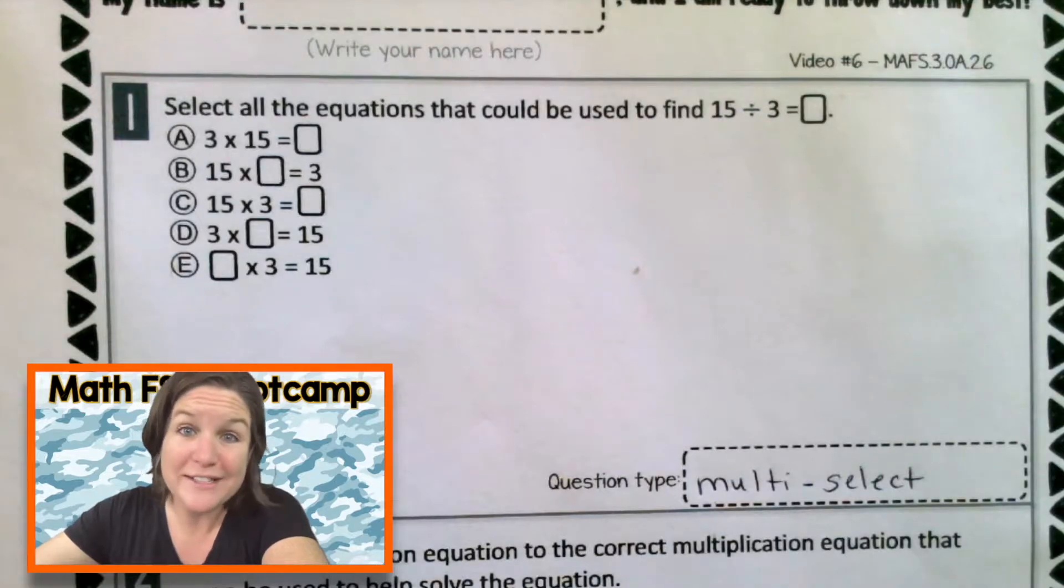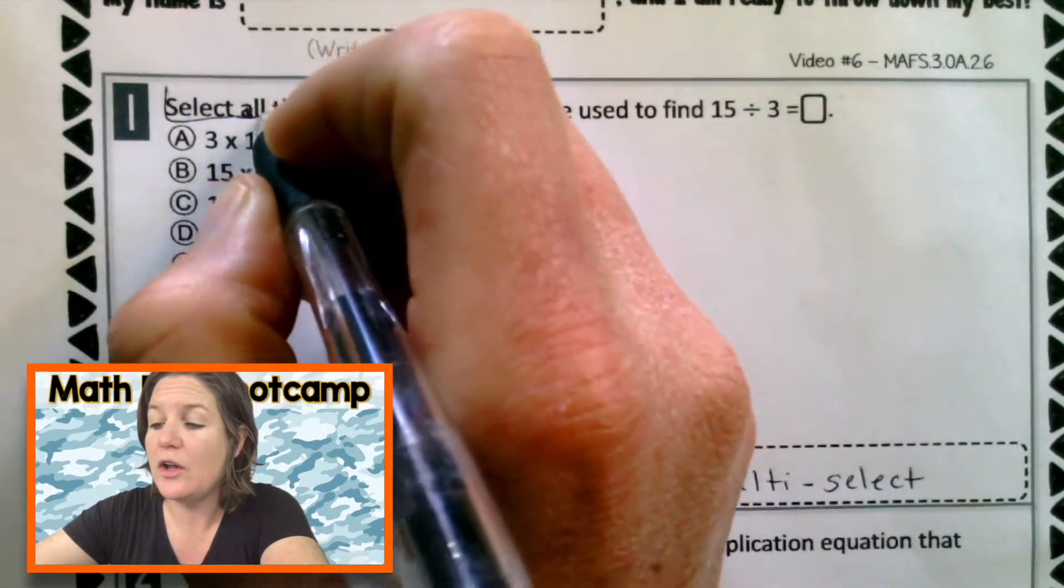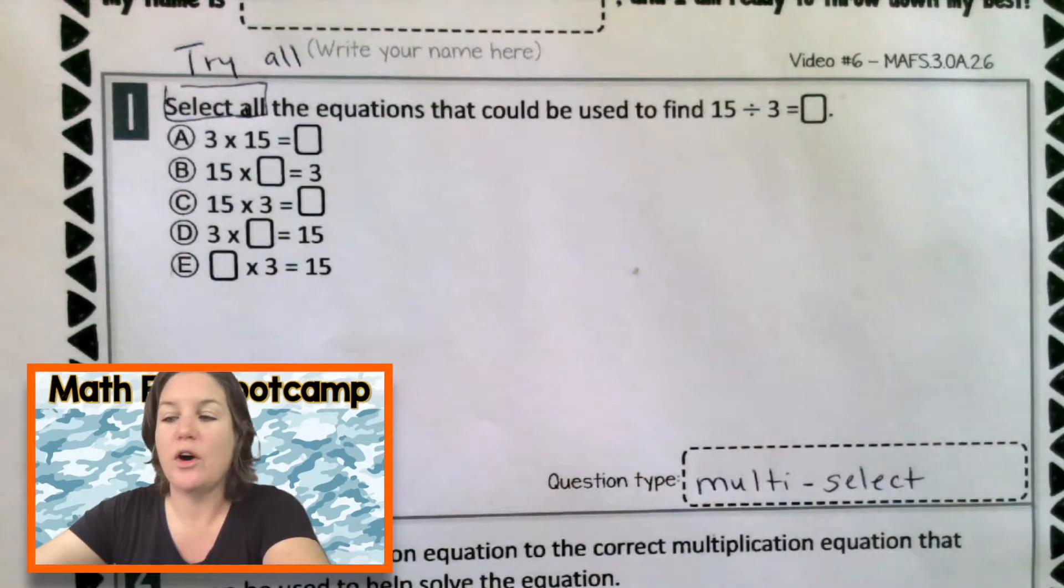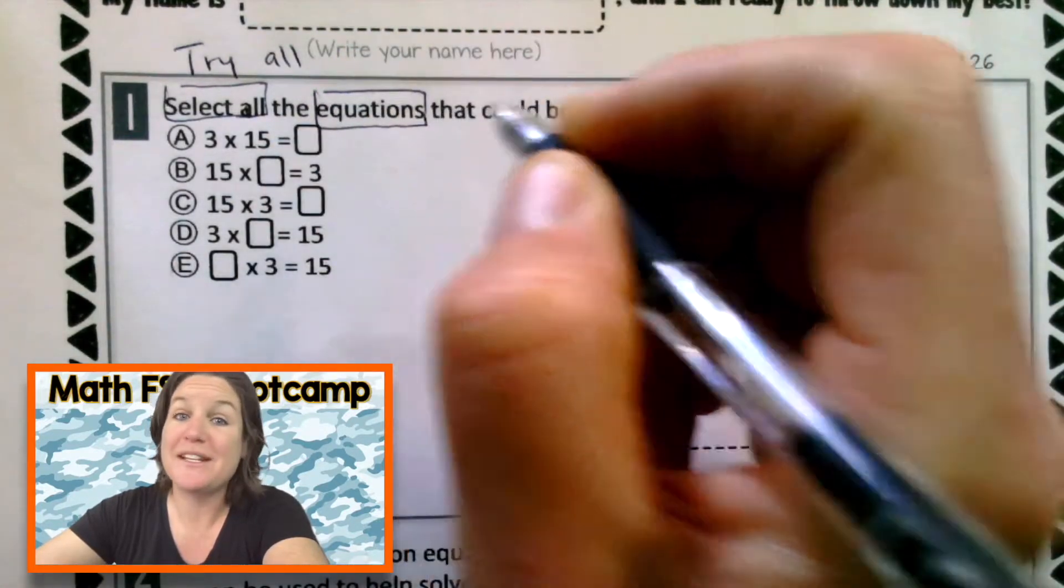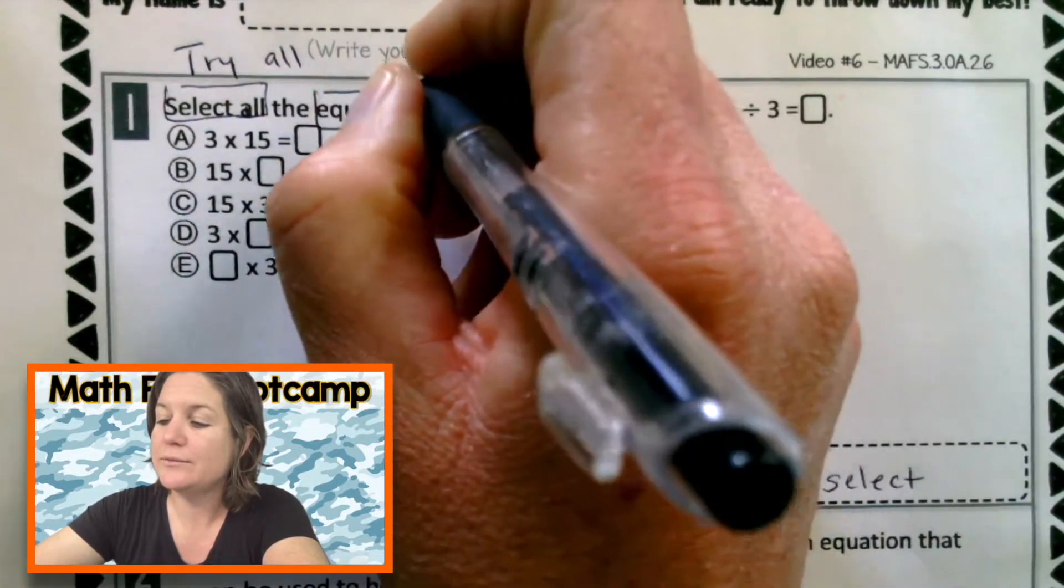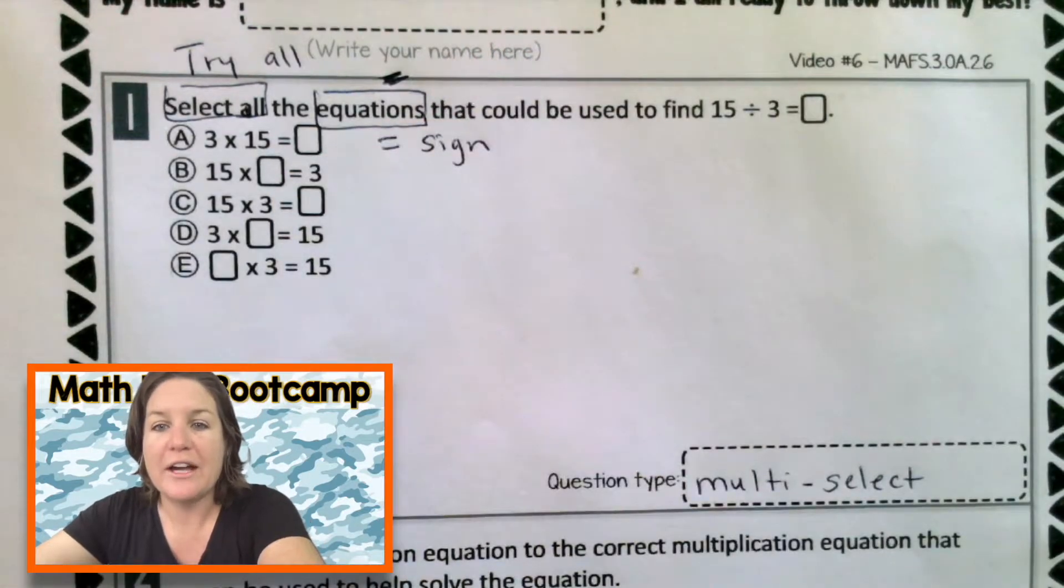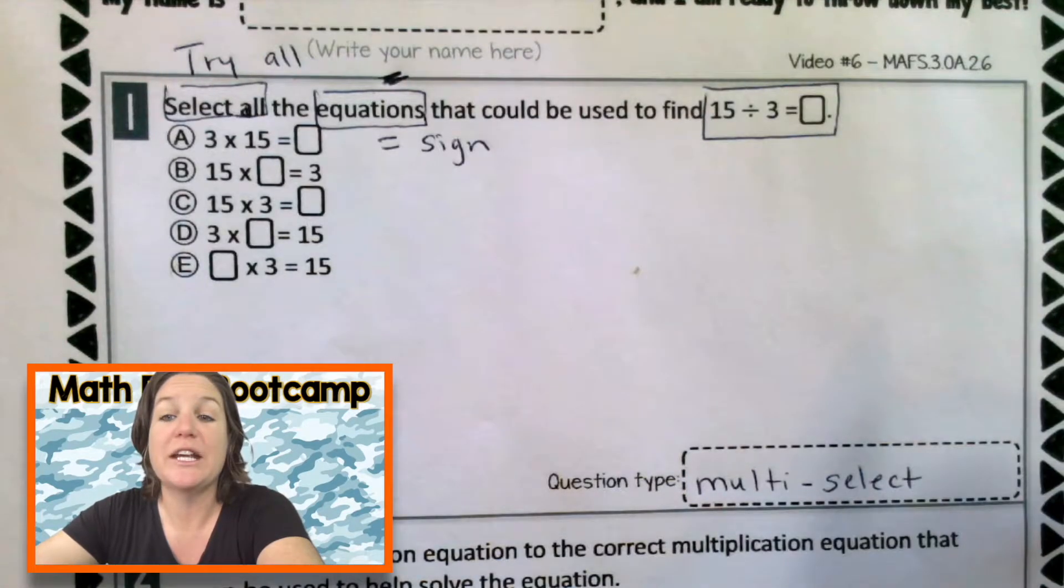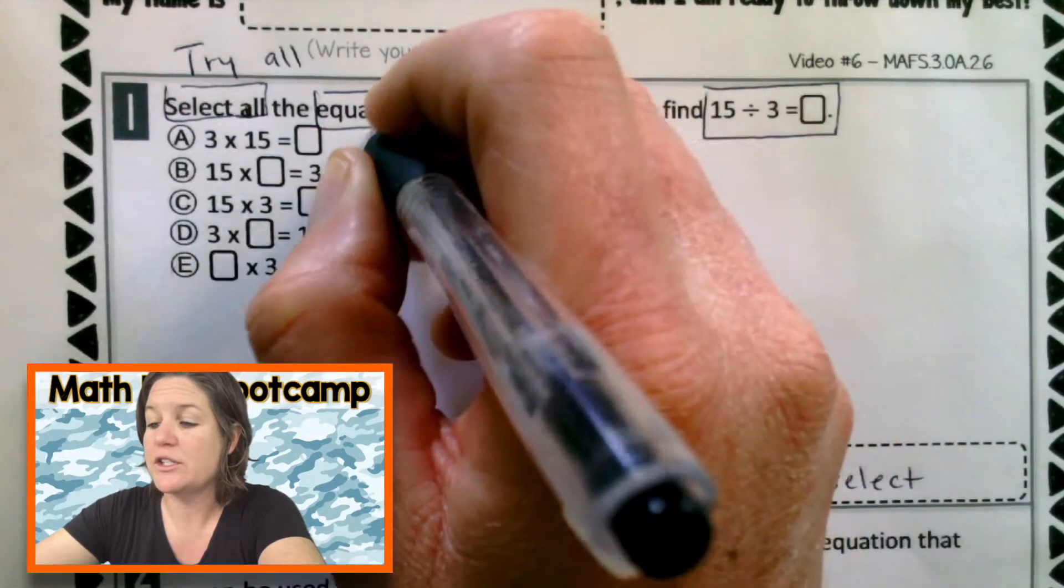Now let's go ahead and mark up our text to have it make sense for us. So this says select all. That means that we are going to try all or work out all of the equations. Equations means that there is an equal sign. That could be used to find 15 divided by 3 equals blank. So we know that the equations are right there.